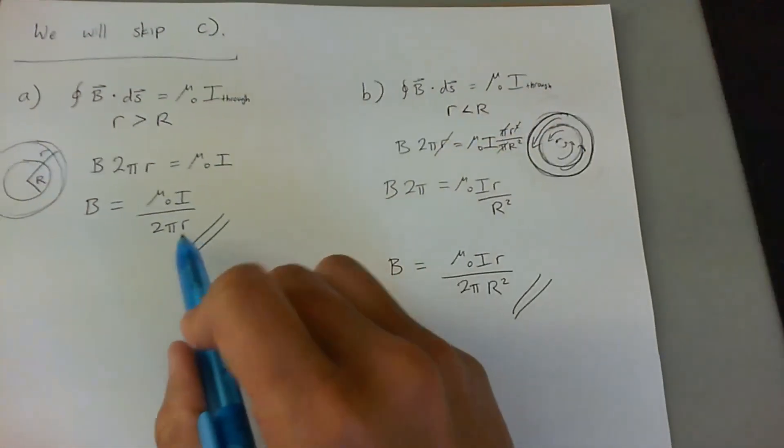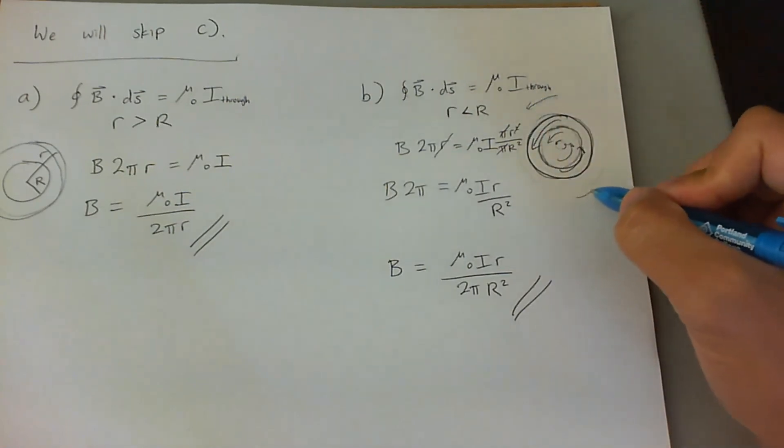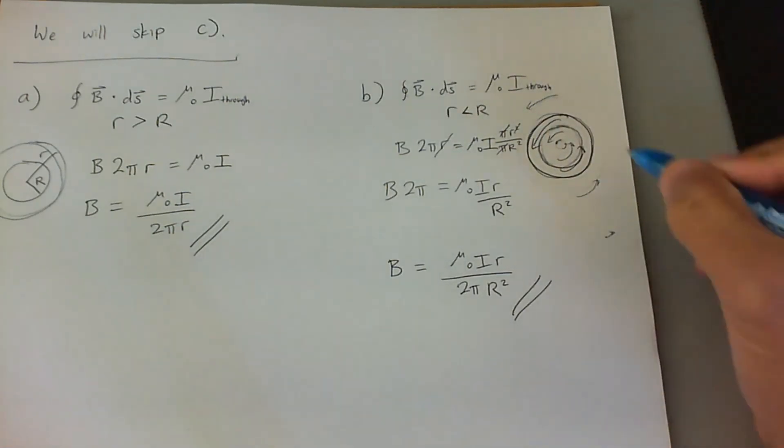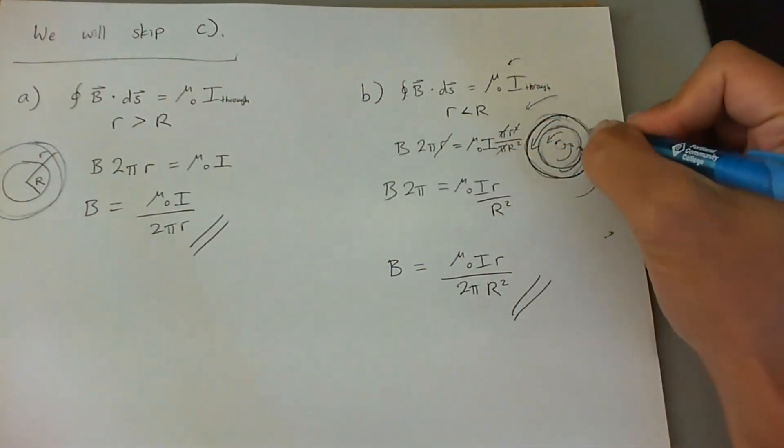But then as you come out, we'll use this equation, and it will start to get smaller again. At the very edges as you get out. So the B field is actually biggest right here.